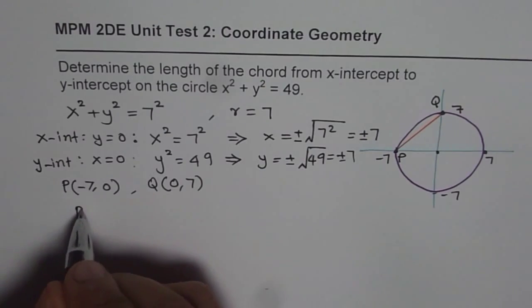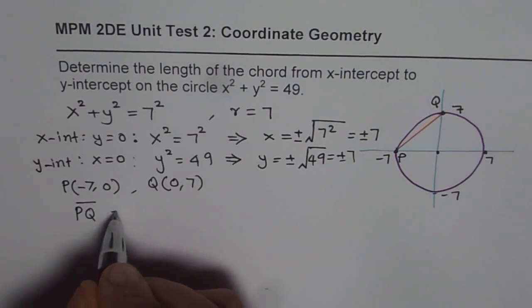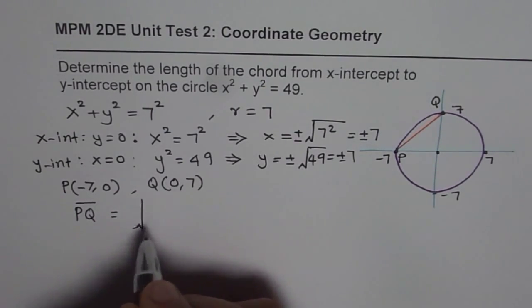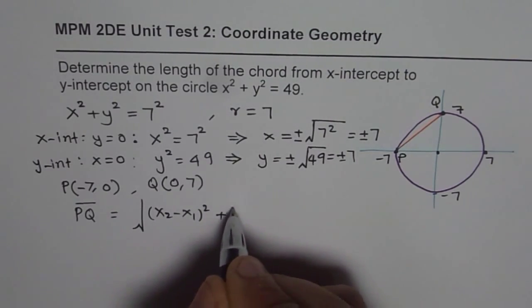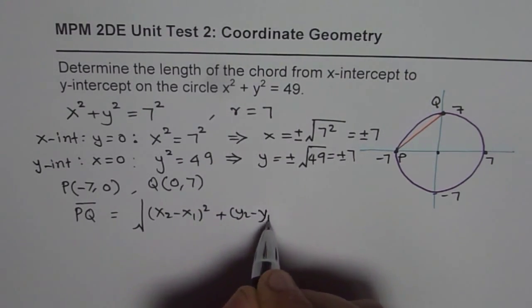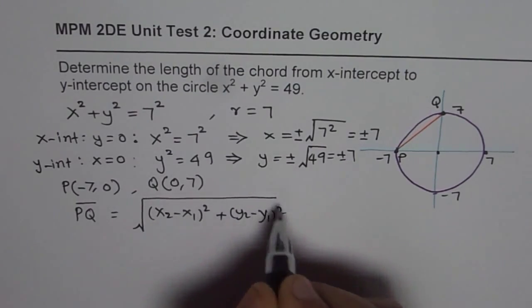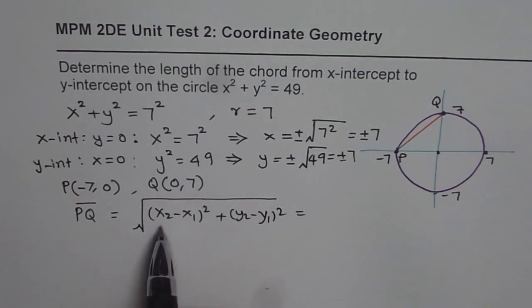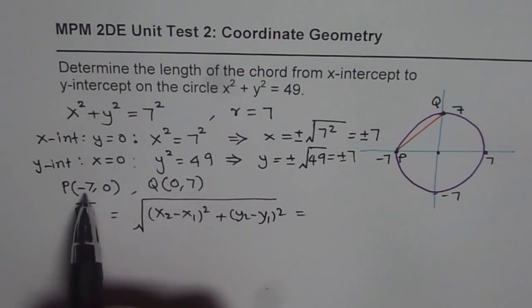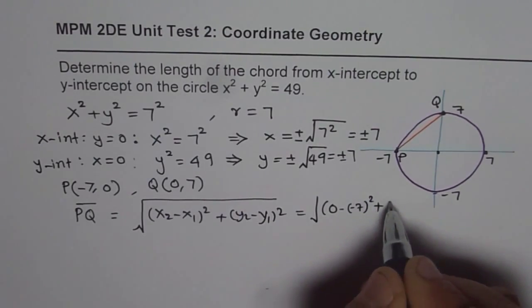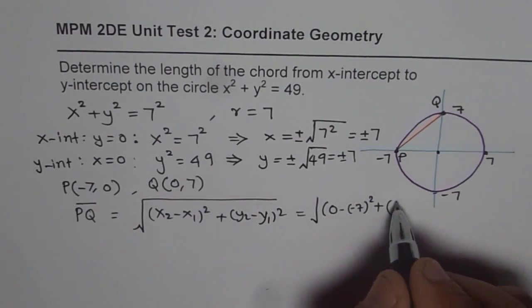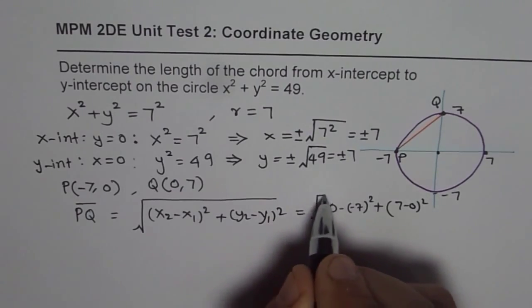So length PQ will be equal to, we will use the length formula, which you know is (x₂-x₁)² + (y₂-y₁)² square root. So in this case, x₂ is 0, so is 0 minus -7. So x₂ is 0 minus -7 whole square plus y value is 7, 7 minus 0 whole square.